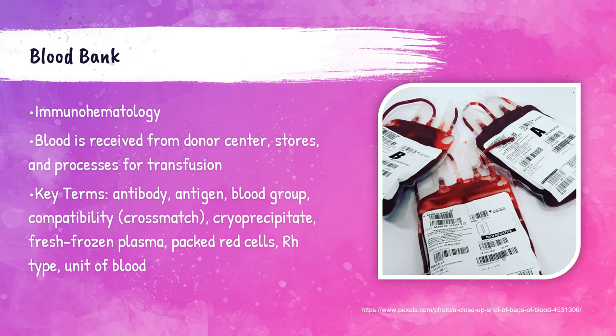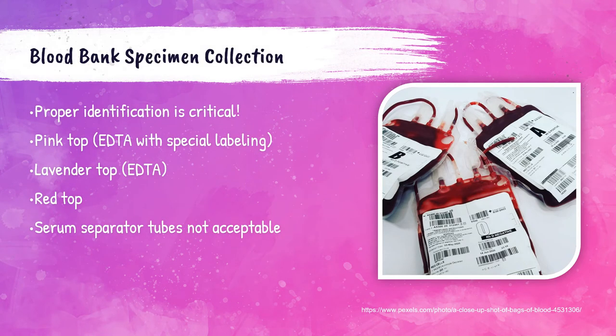The preferred specimen type for blood banking is the pink top tube — lavender or red tops can also be used, but SST tubes are not allowed. Proper identification of blood banking specimens is absolutely critical. If a specimen is not properly identified, a patient may be misidentified and given the wrong unit of blood, which can literally kill a patient.